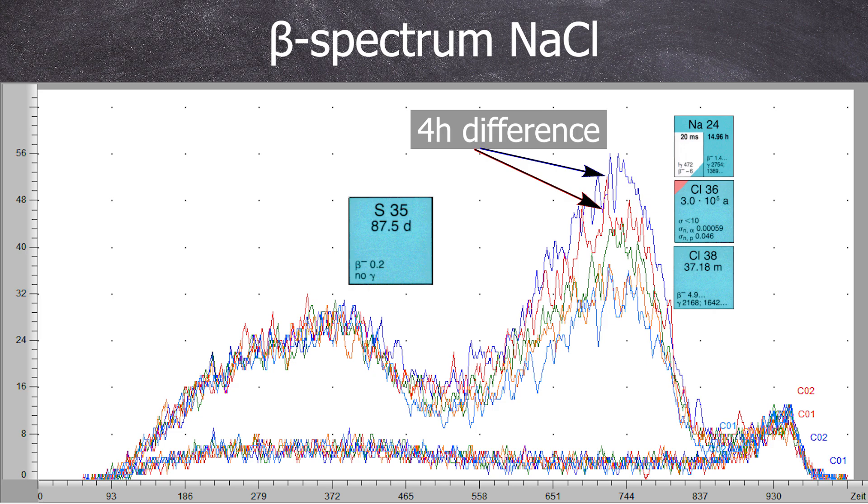Since the measurement series has a 4-hour gap between the blue and the red lines, it cannot be chlorine-38 directly. We've measured it this way: two hours of our sample being measured, then two hours of background, and then two hours of our sample are measured again.